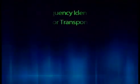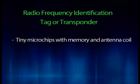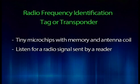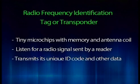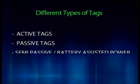The first component is the radio frequency identification tag or transponder. Tags are tiny microchips with memory and an antenna coil, thinner than paper and some only 0.3 mm across. A tag listens for a radio signal sent by an RFID reader. When a tag receives a query, it responds by transmitting its unique identification code and other data back to the reader. Different types of tags are active tag, passive tag, and semi-passive tag.